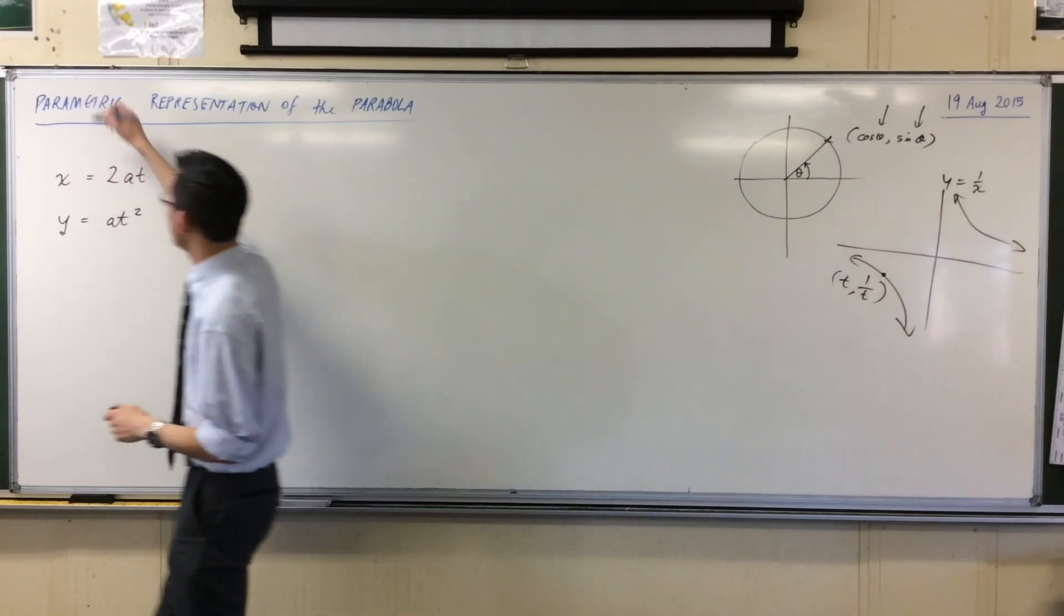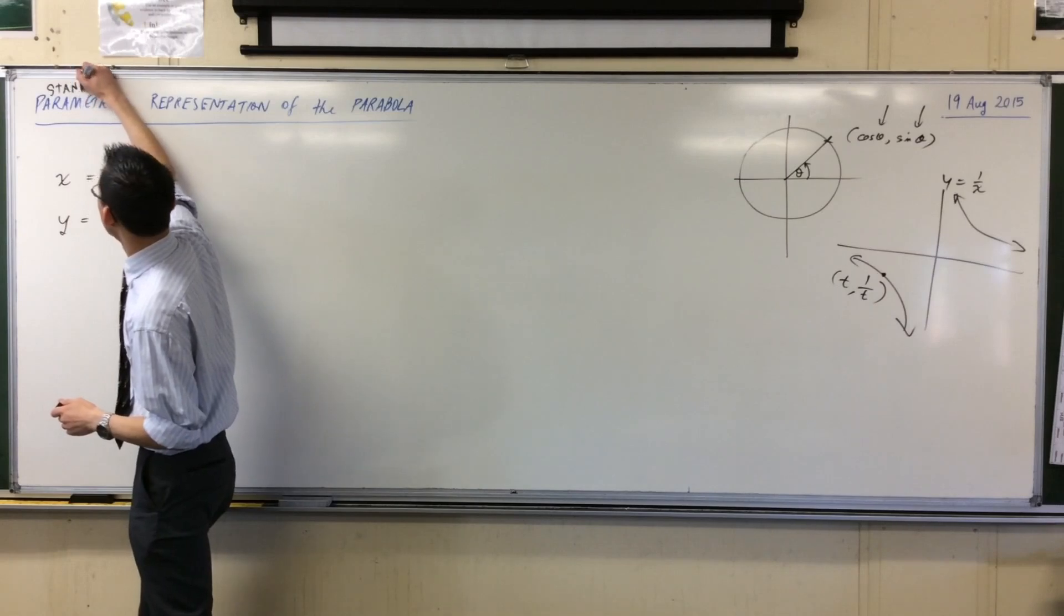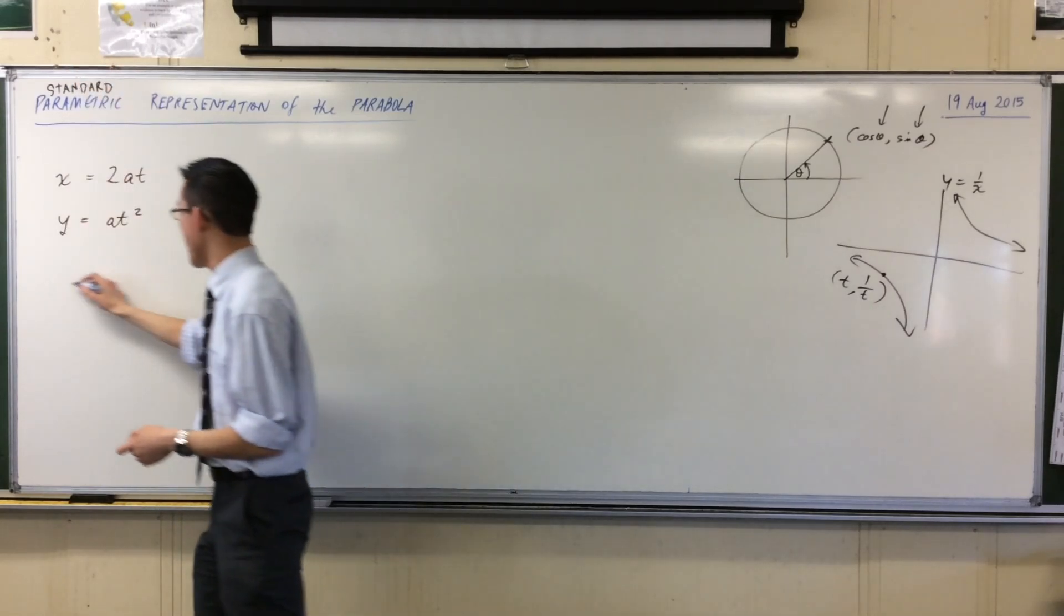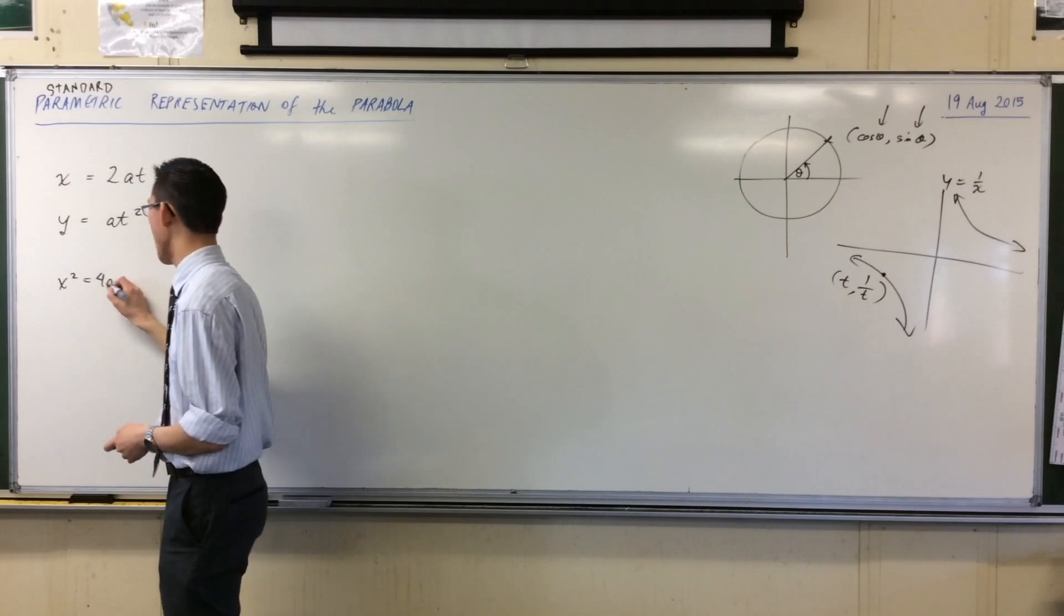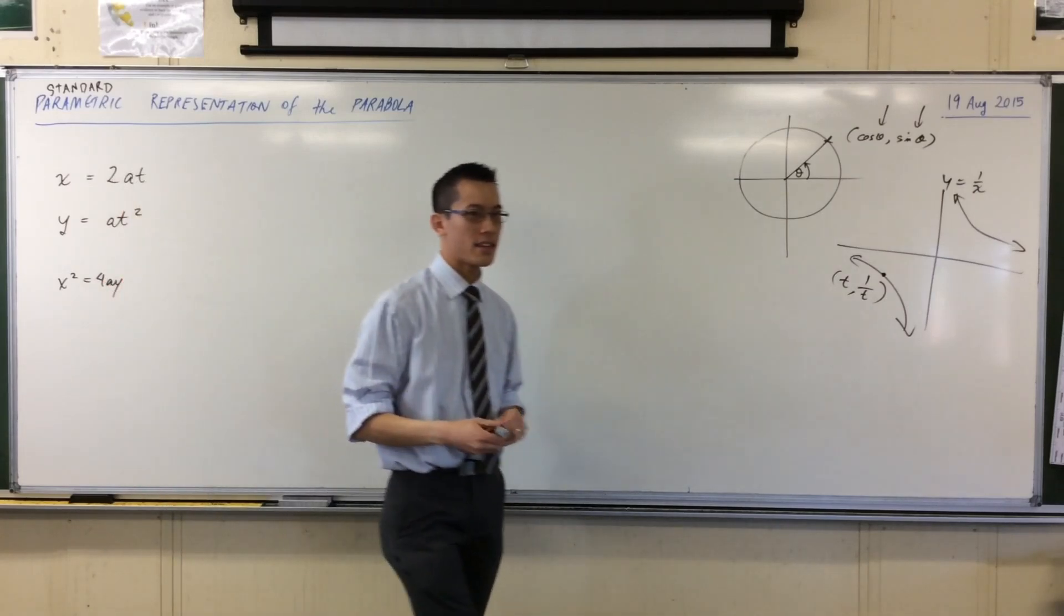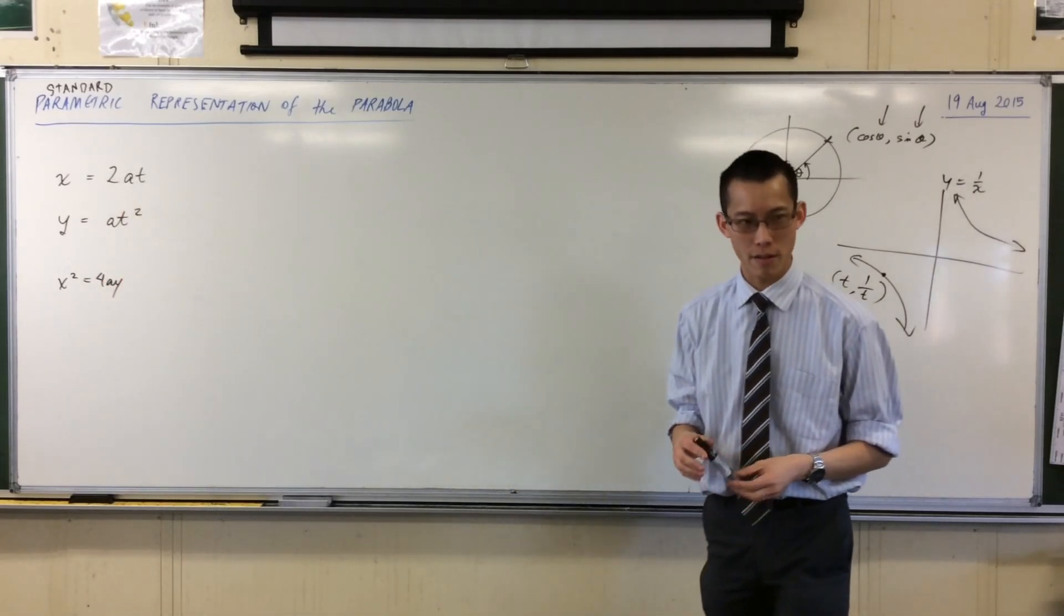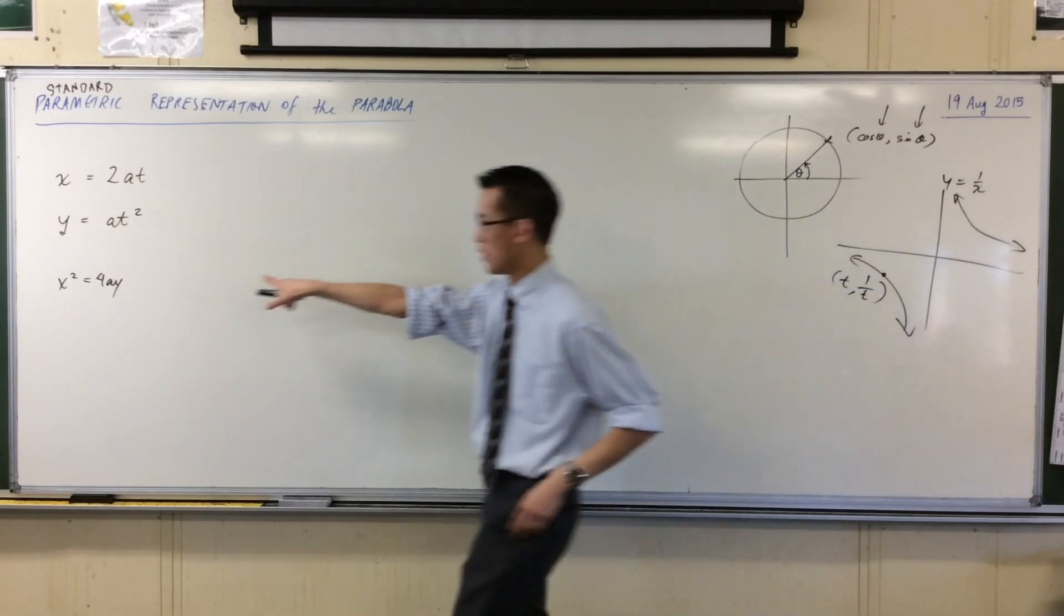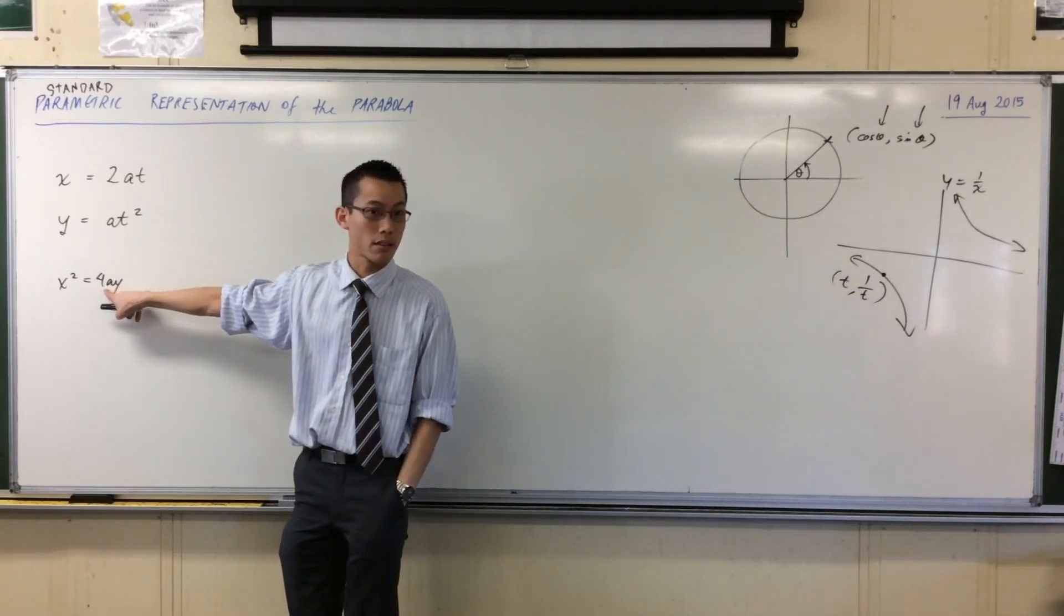What is the parameter for this parametric representation of the parabola? This is the standard parametric representation of the parabola, in exactly the same way that x squared equals 4ay is the locus representation of the parabola, which goes through the origin, because it gives you a locus feature, namely the focal length.